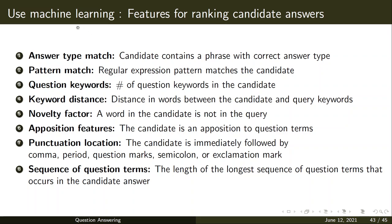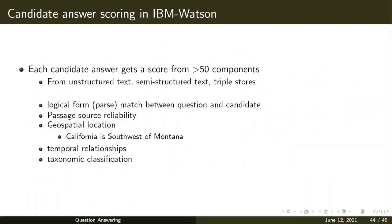In IBM Watson, each candidate answer gets a score from around 50 components derived from unstructured text, semi-structured text, and triple scores — including features like passage source reliability, geospatial location, and temporal relationships.